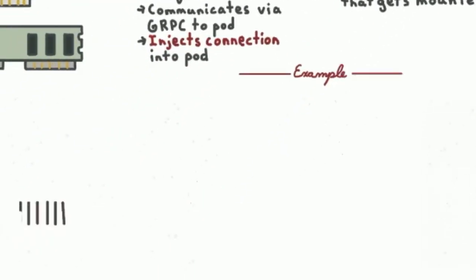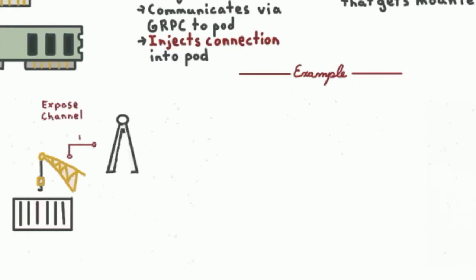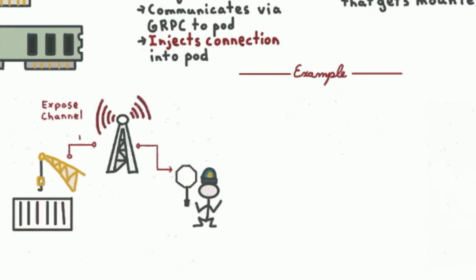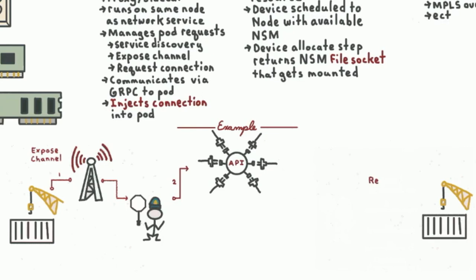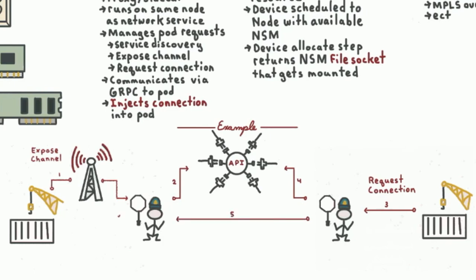Let's run through a simple example of how pod-to-pod connection setup works for network service functions. If a pod on the right exposes a channel for a network service, it informs its NSM. The NSM adds a network service endpoint at the API server so the network service endpoint is now indicated. When a pod on a different node requests a connection to that channel on the network service, it figures out from the network service endpoints which NSM is managing a pod that provides this service and makes a selection. Having made that selection, it sends a request connection to the NSM, which forwards the request to the pod so the pod knows it's going to receive a new connection.